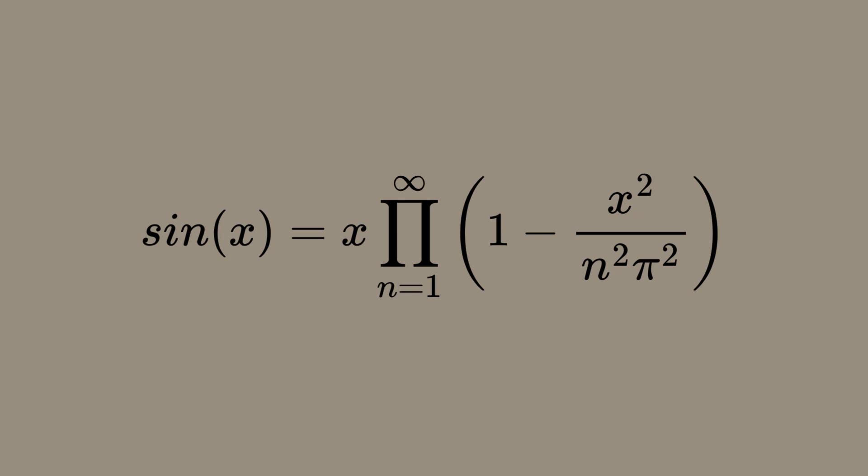Euler started by considering the function sine of x, which can be expressed as an infinite product involving its roots or zeros. For sine of x, these zeros occur at integer multiples of π. This gives us the expression sin(x) = x times the product from n=1 to ∞ of [1 - x²/(n²π²)].